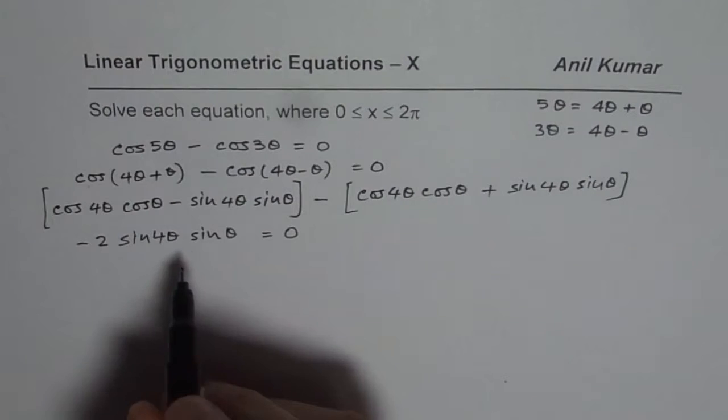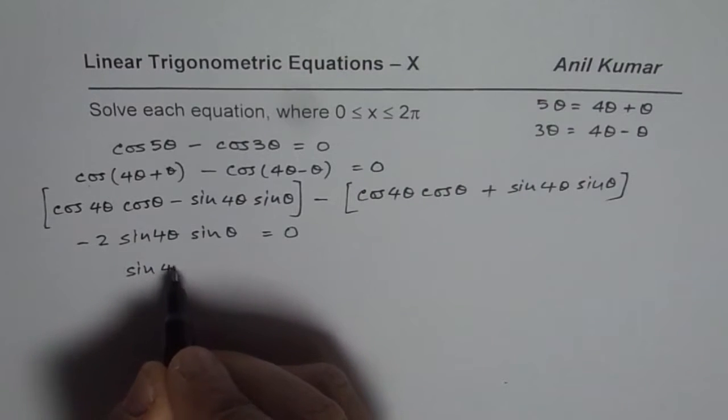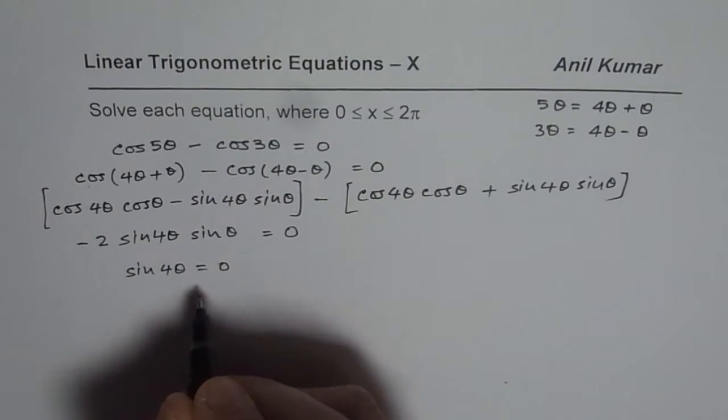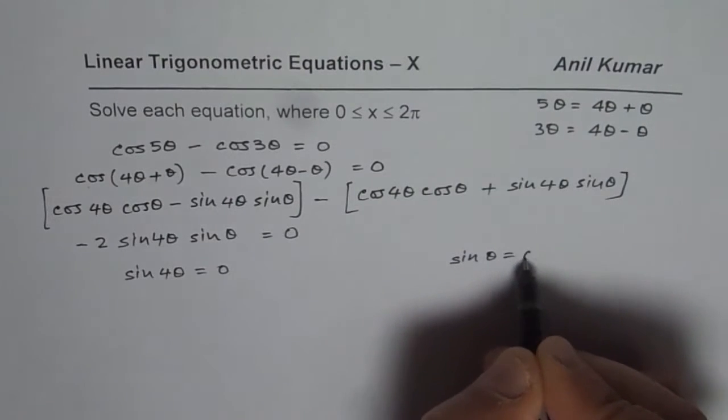Now we can have two sets of solutions: one from sin 4θ equals 0 and the other from sin θ equals 0.